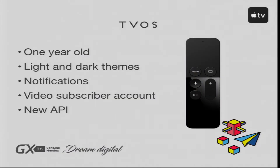The other new platform, only one year old, is tvOS. The big change is the way of interacting with applications using the remote provided by Apple, which has a tactile surface. In the last version of tvOS, the changes were minor — like the possibility of having light and dark themes in the application and support for notifications, which was not available in the previous version. As with watchOS, many APIs have been brought to this new platform.